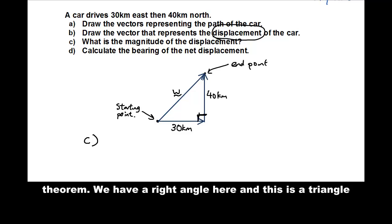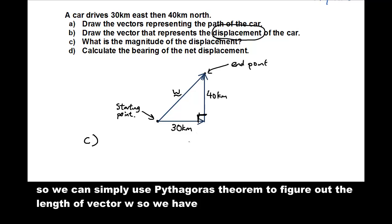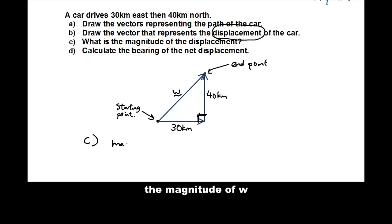What is the magnitude of this displacement? And here is where we use Pythagoras theorem. We have a right angle here. And this is a triangle. So we can simply use Pythagoras theorem to figure out the length of vector W. So we have the magnitude of W vector W, which is denoted vector W with two lines outside it like that. That is the symbol for magnitude. The magnitude is simply 30 squared, plus 40 squared, and square root it.